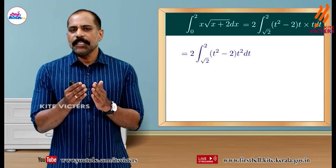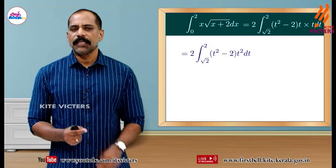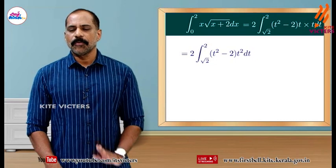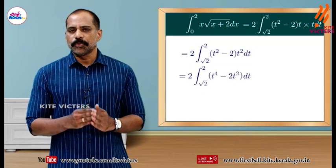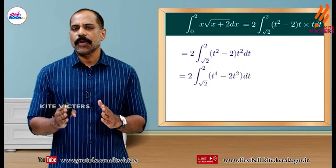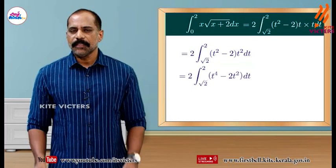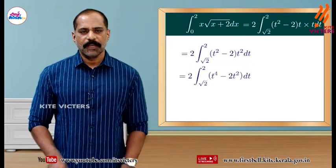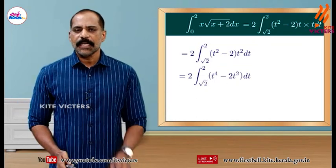Expanding the bracket: (t squared minus 2) times t squared gives t raised to 4 minus 2 times t squared. So we have 2 into integral from root 2 to 2 of (t raised to 4 minus 2 t squared) dt. Integrating: t raised to 5 by 5 minus 2 t cubed by 3, with upper limit 2 and lower limit root 2.